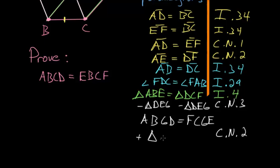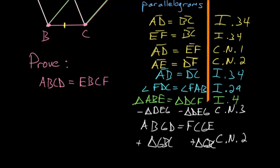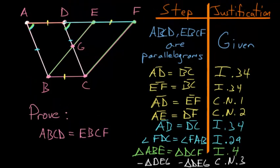We're adding triangle GBC to each side of this equation involving two equal trapezoids. But notice what happens when we add to these two trapezoids.